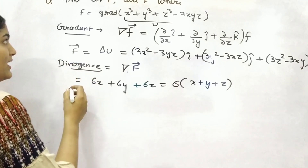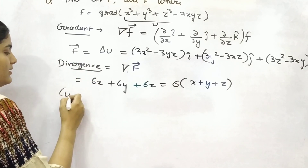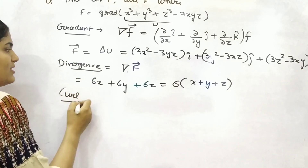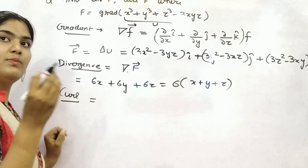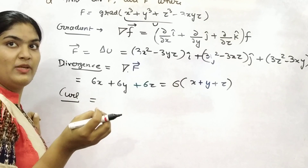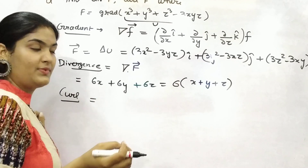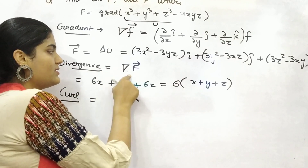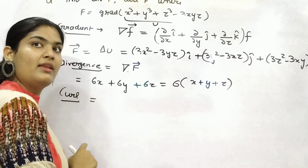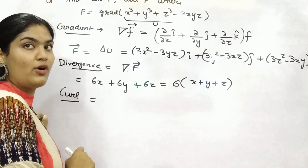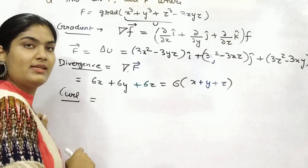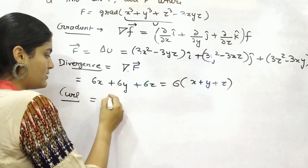Now, in order to find out curl, there is a slight difference between divergence and curl. Divergence is a dot product, whereas curl is a cross product.